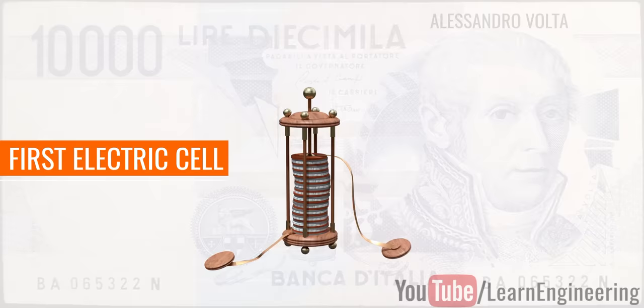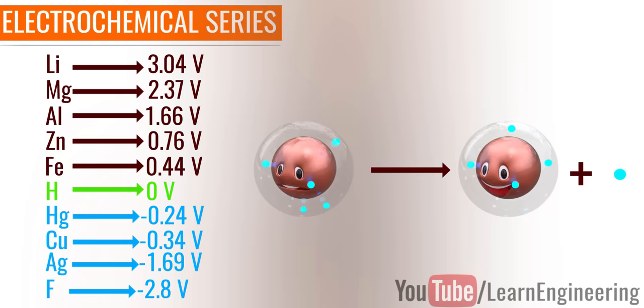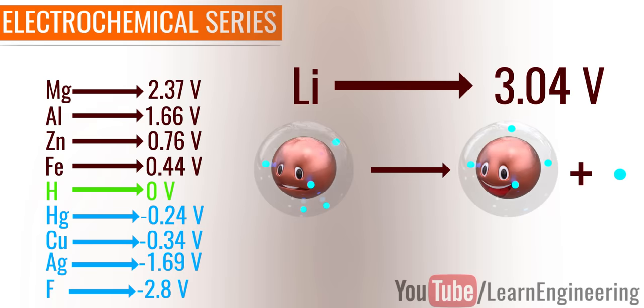A general electrochemical series is shown here. According to these values, lithium has the highest tendency to lose electrons, and fluorine has the least tendency to lose electrons.